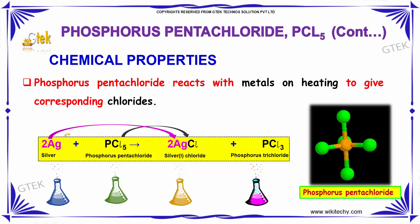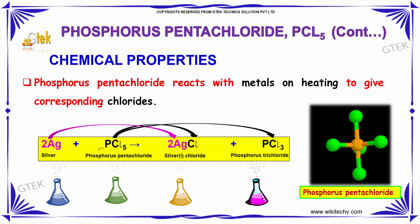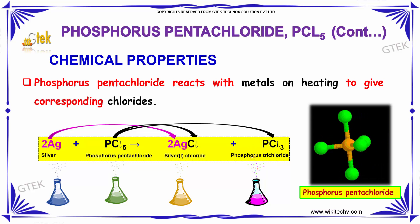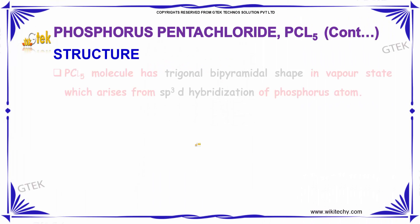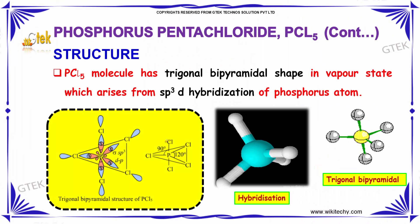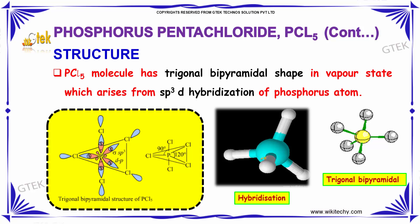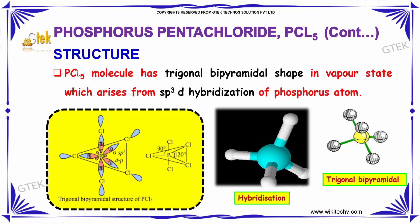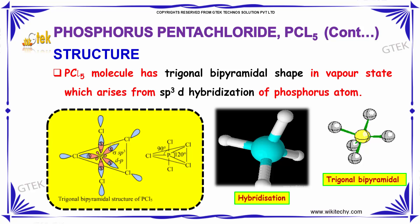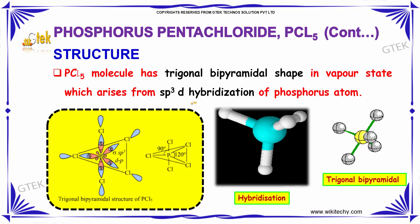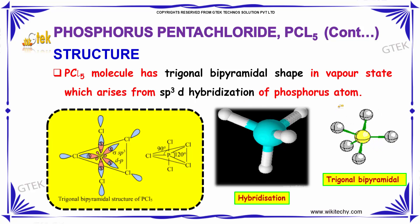PCl₅ also reacts with metals on heating to give the corresponding chlorides. For example, silver (Ag) with PCl₅ gives silver chloride (AgCl) and PCl₃.